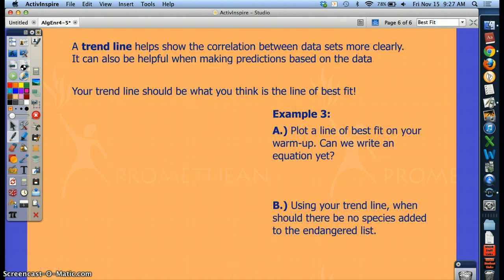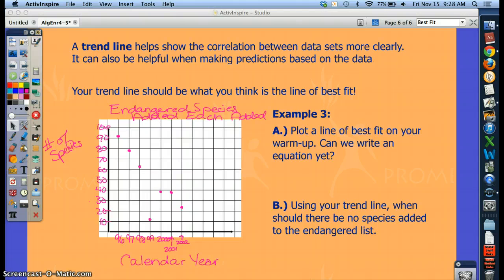The last part then about this lesson is using a trend line. The trend line shows the correlation between data sets more clearly. It also can be helpful when making predictions. So we're going to approximate our trend line. We don't have an exact method for this, but I'm going to get our graph from the warm-up first. So now I have our graph from the warm-up. You can flip back to your warm-up page. Just flip back to the chart at the beginning of these notes.